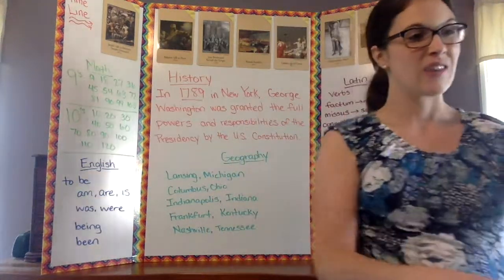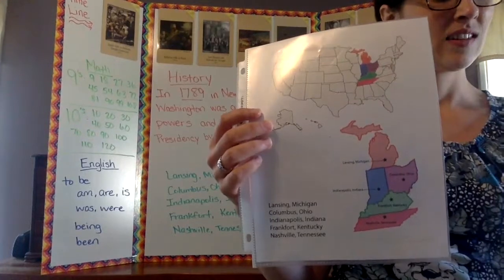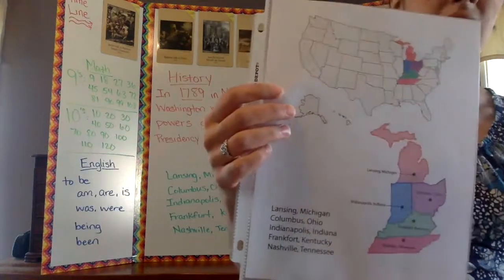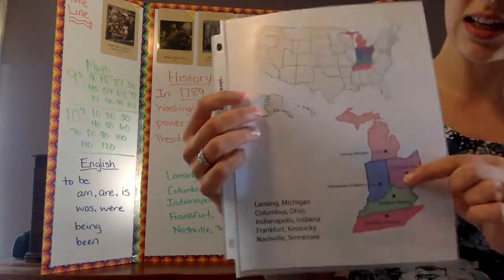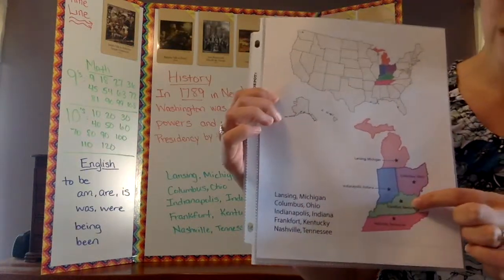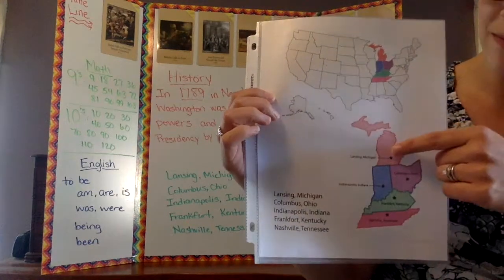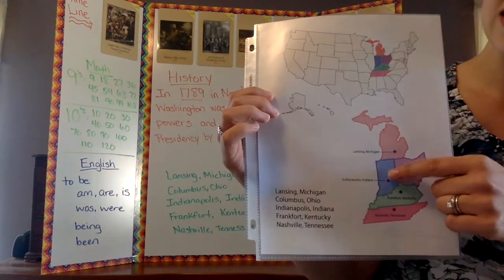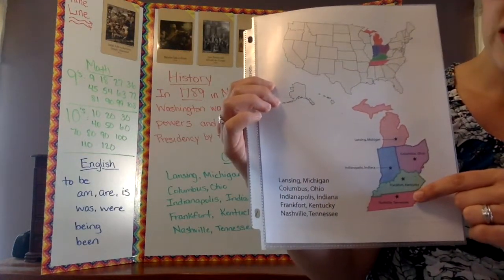And geography — here's our map for today. Let's sing along: Lansing, Michigan; Columbus, Ohio; Indianapolis, Indiana; Frankfort, Kentucky; Nashville, Tennessee. And we sang it again to practice: Lansing, Michigan; Columbus, Ohio; Indianapolis, Indiana; Frankfort, Kentucky; Nashville, Tennessee. Very nice.